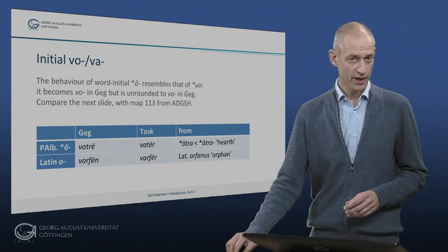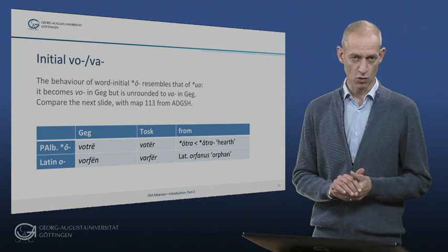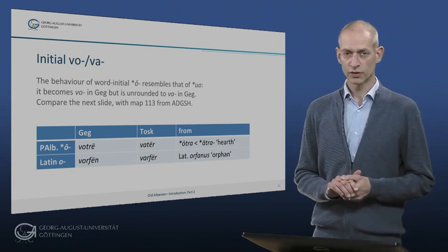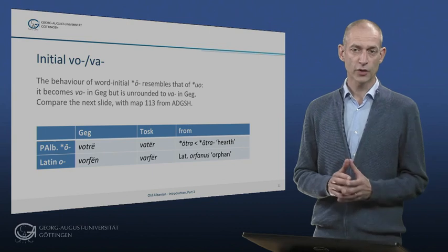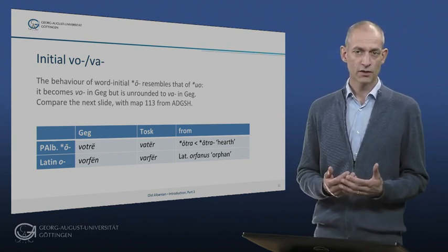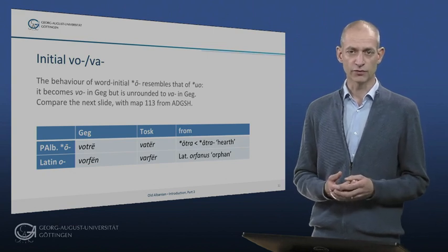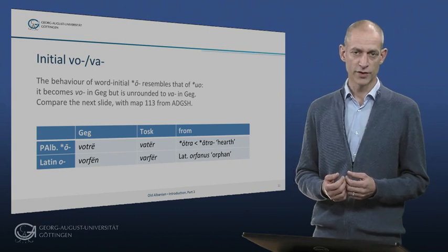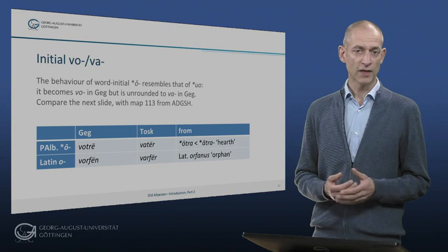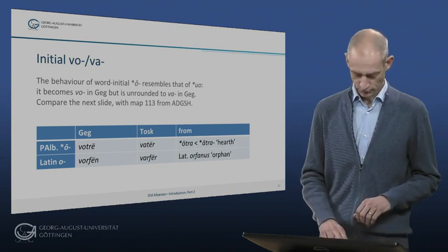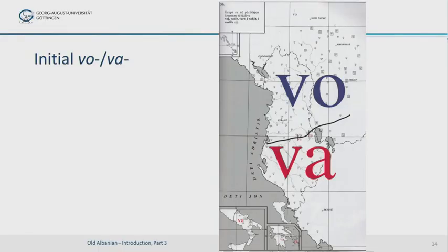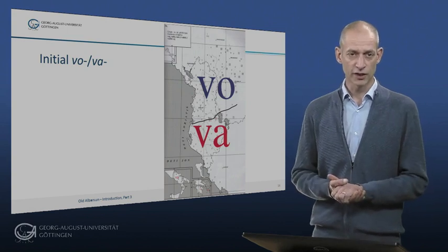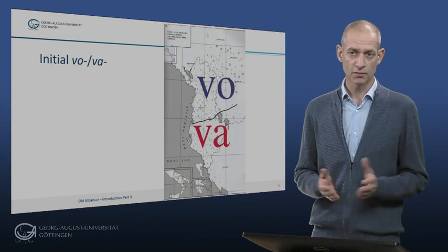Another clear isogloss between GEG and TOSK concerns the development of Proto-Albanian word-initial long O, which resembles the fate of the word-internal and word-final diphthong UO. Word initially, we find VO in GEG but VA in TOSK, where the vocalic element has been lowered from O to A. The development is found in inherited words such as the word for 'hearth' and 'water,' but also in a few Latin loanwords with initial O, such as the word for 'orphan,' VARFËR, from Latin ORPHANUS. The next map shows that the distinction between VO and VA goes back at least to the earliest TOSK migrations to Greece. This is the only phonological isogloss between GEG and TOSK that is as clear as the rhoticism of N to R.